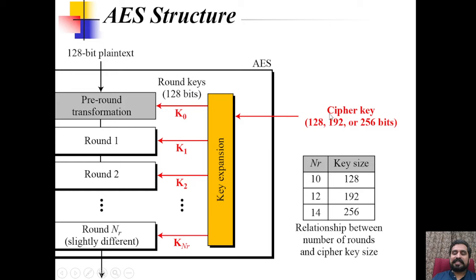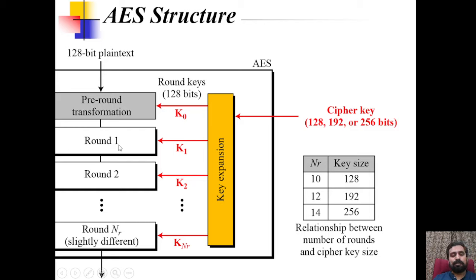All these are the different cipher keys used for encryption and decryption processes. The key expansion function receives an input of 128, 192, or 256-bit cipher key and converts it into sub-keys used for the different rounds. The first key, k0, is used for the pre-round transformation; k1 is used in round 1, k2 for round 2, up to round n. So for 128-bit AES, we have 10 rounds; for 192-bit, 12 rounds; and for 256-bit, 14 rounds.